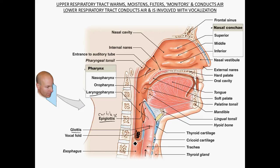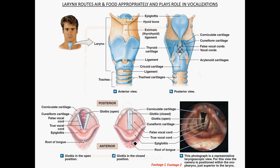The larynx routes air and food appropriately and plays a role in vocalization. Looking at this anterior view of the larynx — shown here on a male — we see the very prominent thyroid cartilage. Thyroid means shield, and this anterior view does look like a shield. In males, this ridge becomes very pronounced at puberty because testosterone affects cartilage growth. This enlarged thyroid cartilage in males compared to females is quite prominent — you can probably palpate, or feel, it on your own neck.